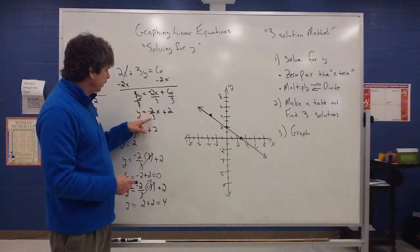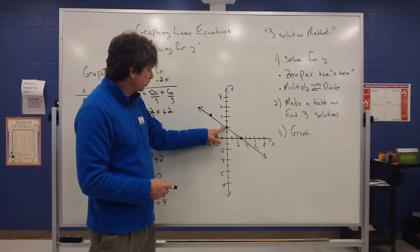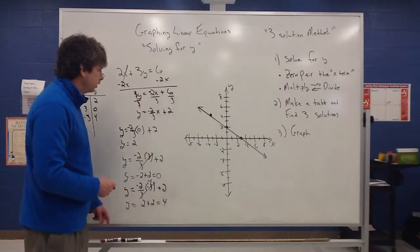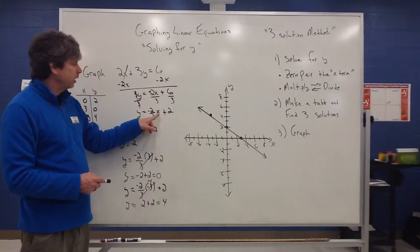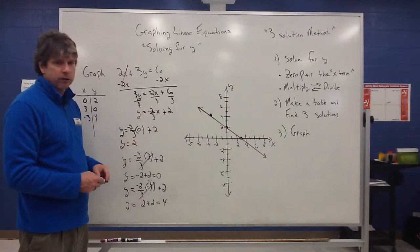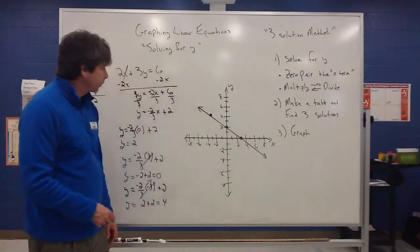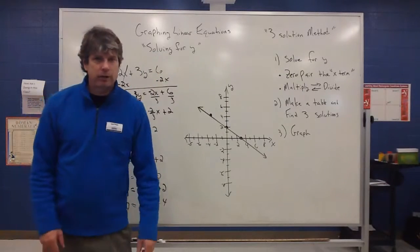Something else we're going to pick up on is this negative 2 thirds. Notice how it's going to have a relationship with this problem. If I go down two, right three. That's going to help me see some things. We're going to talk more about that special number, that number in front of the x. This coefficient has some special meaning as we move forward. So I'm going to stop there, and I will do one more example solving for y. Stay tuned.